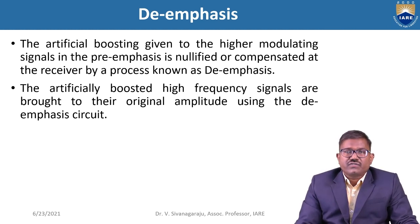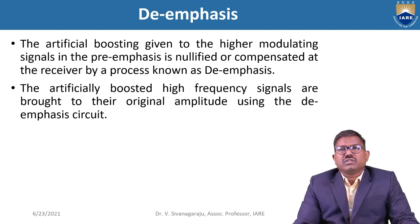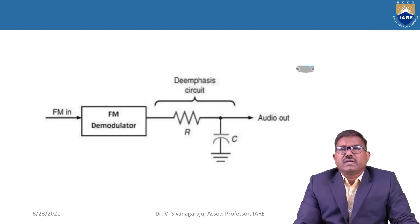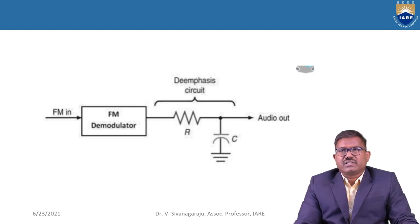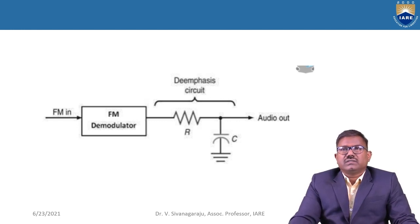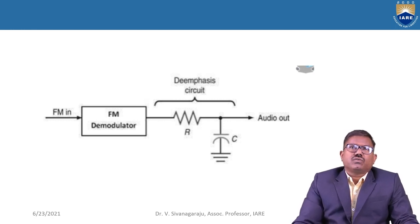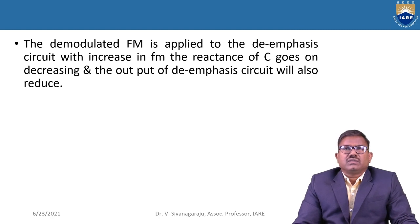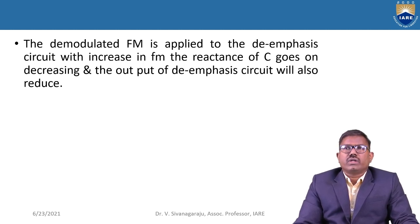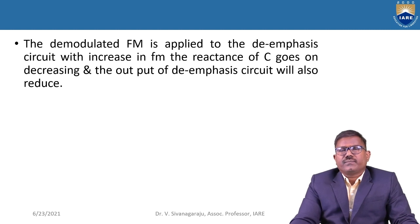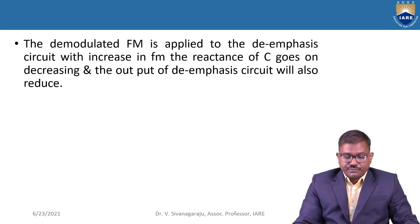The artificially boosted high frequency signals are brought back to their original amplitude using the de-emphasis circuit. These pre-emphasis and de-emphasis circuits are very useful in FM frequency modulation. The demodulated FM is applied to the de-emphasis circuit; with increase in frequency the reactance of C goes on decreasing and the output of the de-emphasis circuit will also reduce. Thank you. Like, share and subscribe, and hit the bell icon for more updates. Bye-bye.